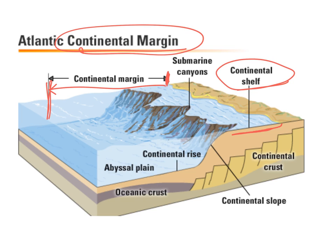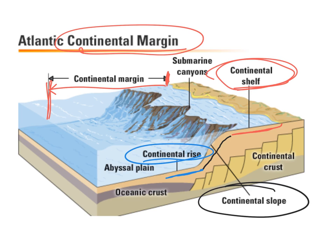The continental shelf gives way to the continental slope, which is where we have a steep downward progression of the ocean floor, taking us down toward the abyssal plain. Before we get there, we have the continental rise, which is a gradual sloping again. The continental shelf, continental slope, and continental rise together make up the continental margin — very productive and economically important areas.